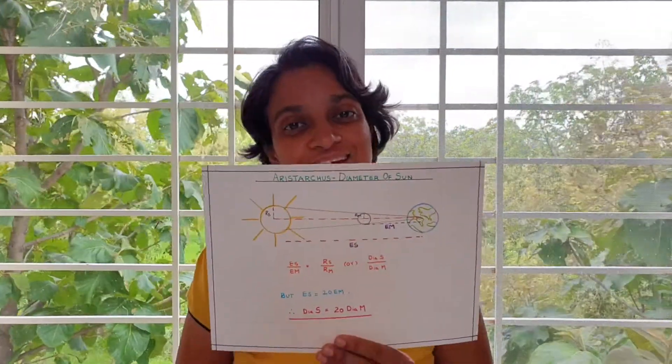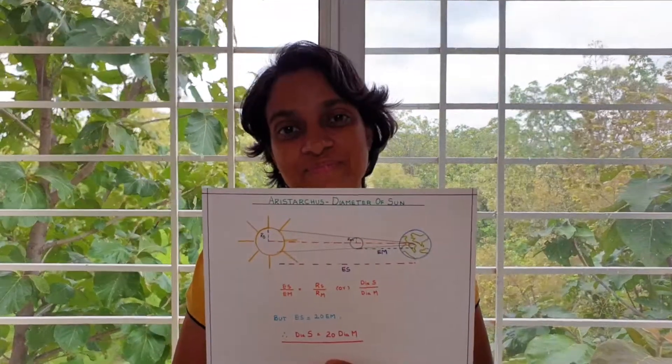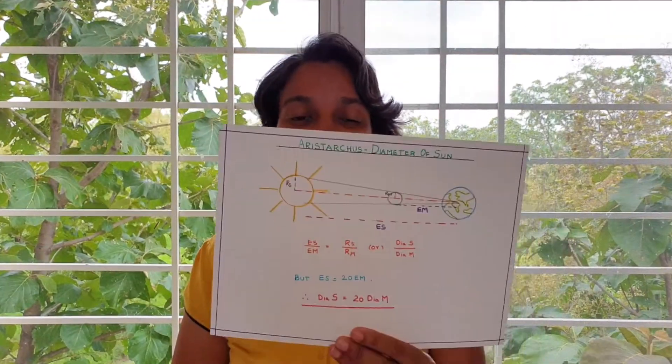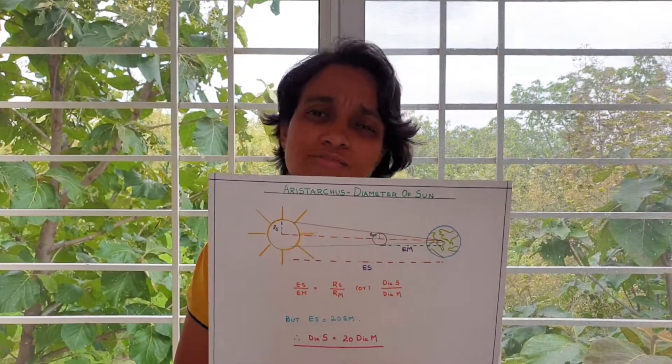Hi, welcome to Fun Science with Rohini. The experiment of today is how Aristarchus measured the diameter of the sun. Yesterday it was Aristarchus measuring the earth-sun distance. Today it is Aristarchus again measuring the diameter of the sun.